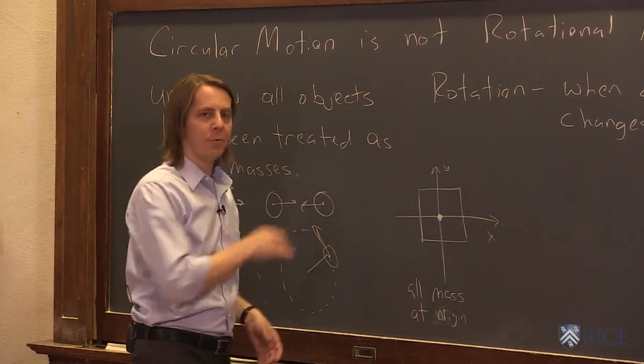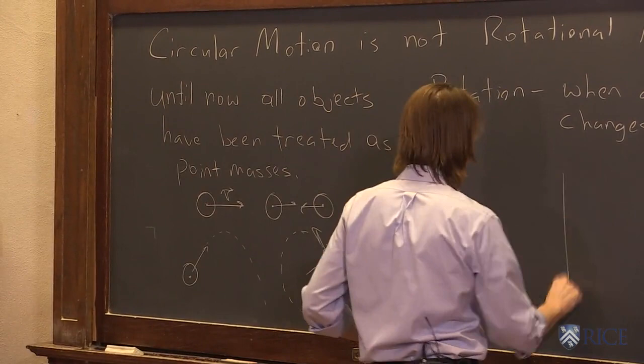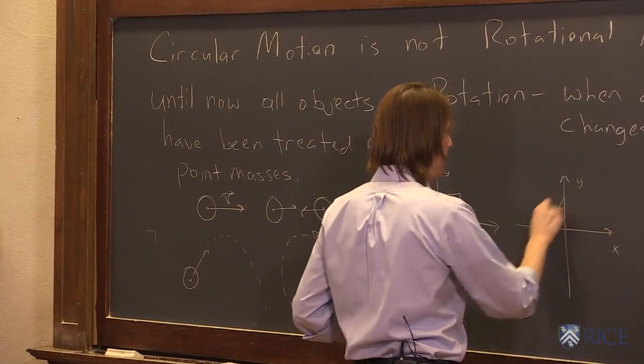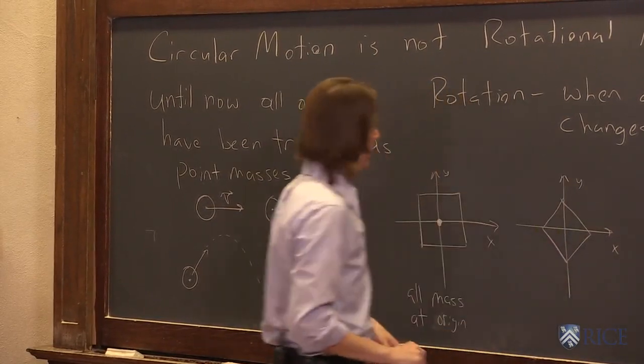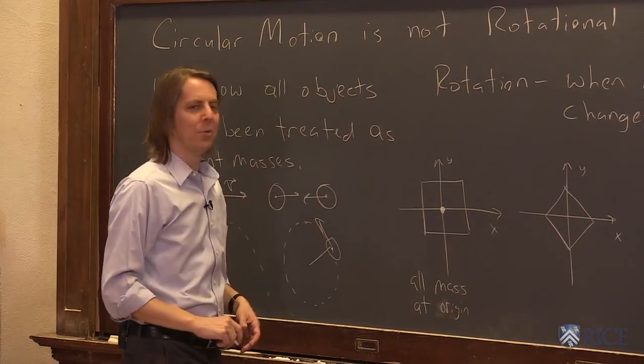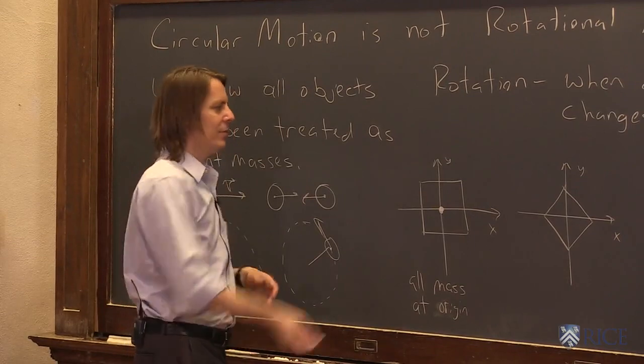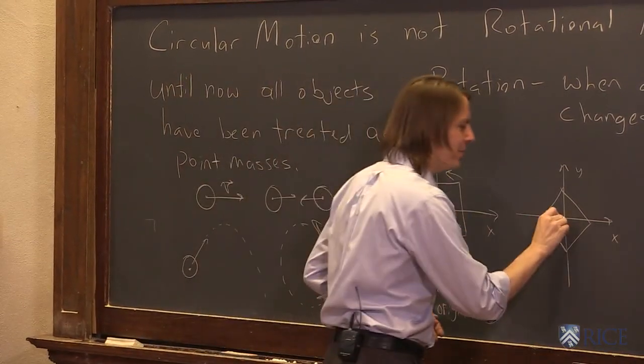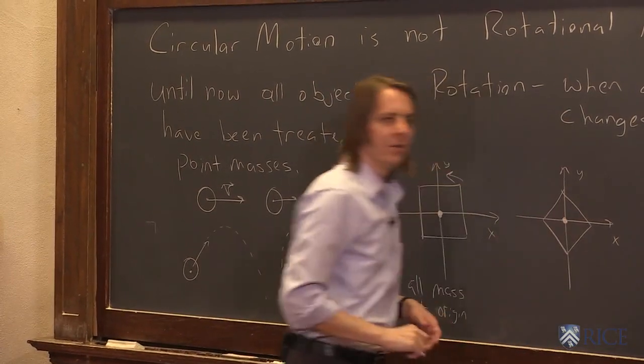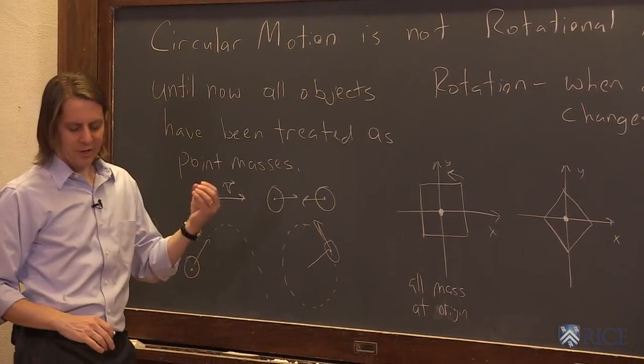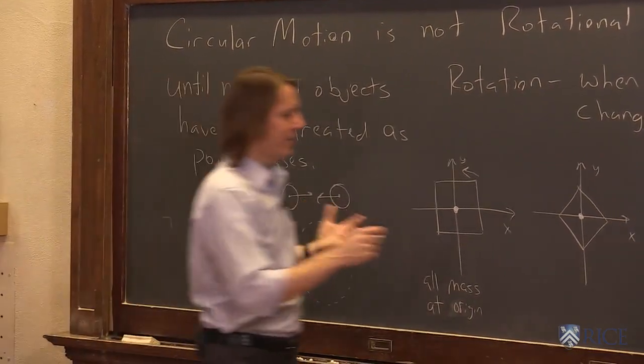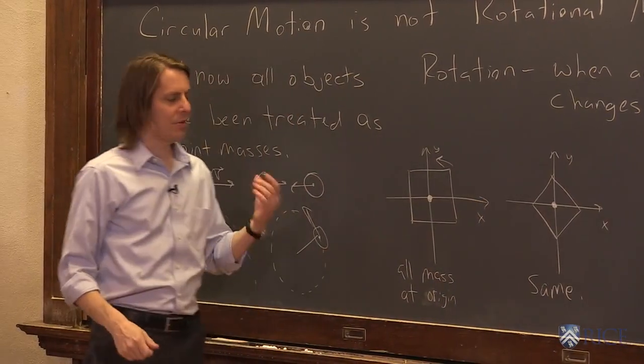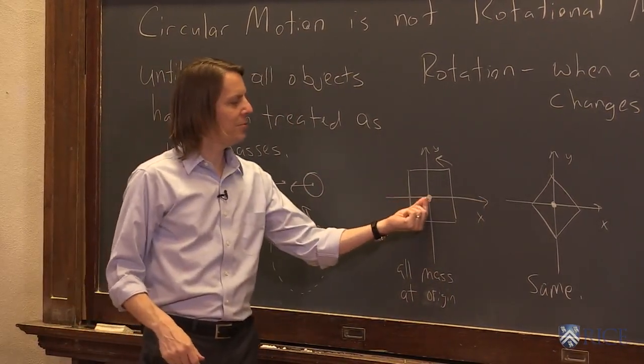Now what if we turn it 45 degrees? I'll do the same thing. I'll draw my x and my y, and now it looks kind of like this. I accidentally drew it a little smaller, but it looks kind of like that. We've turned it a little bit that way. Its center of mass, though, is still at the origin. So in terms of treating this thing like a point particle, it's the same. There's no difference between this and this. It's a point particle with mass m at the origin.